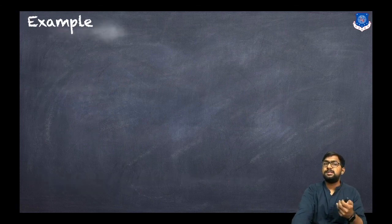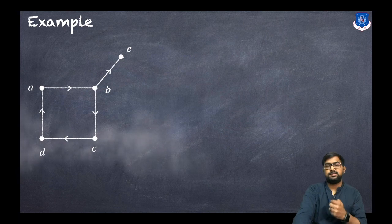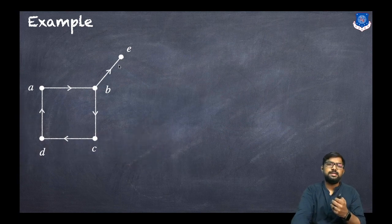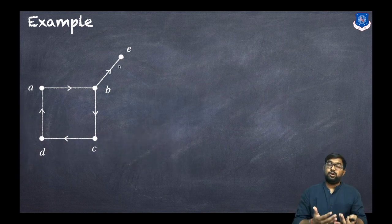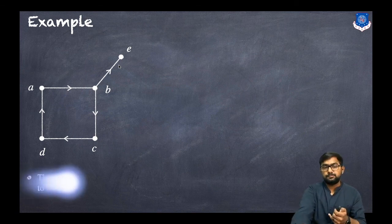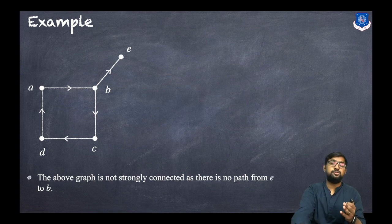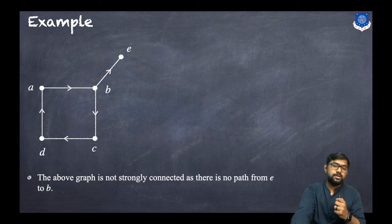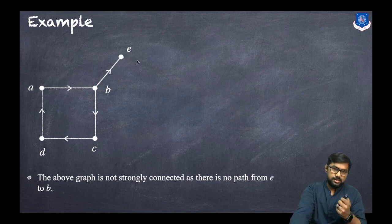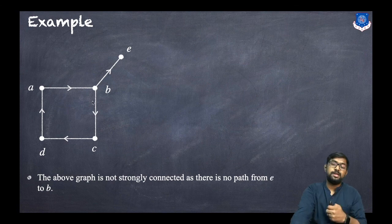Now consider another example with vertices a, b, c, d, e. Is this graph strongly connected or weakly connected? The above graph is not strongly connected because there is no path from e to b. We can go from b to e, but we cannot go from e to b, so it is not strongly connected.